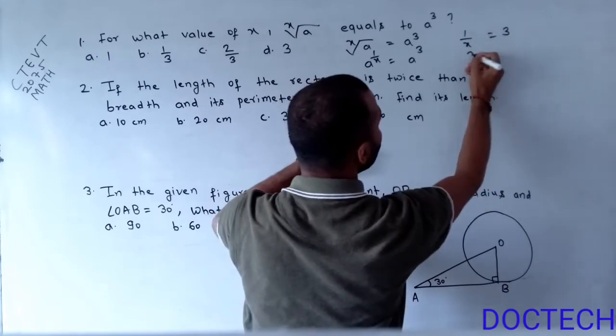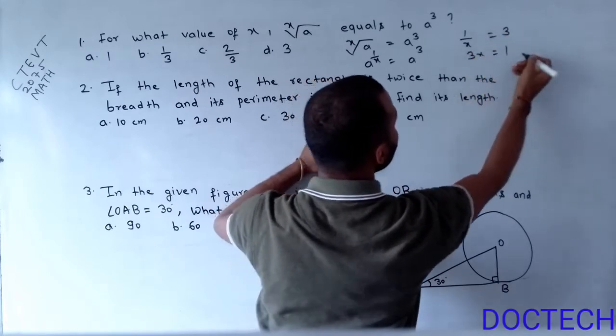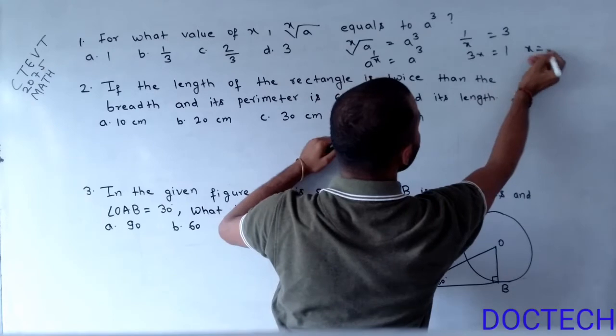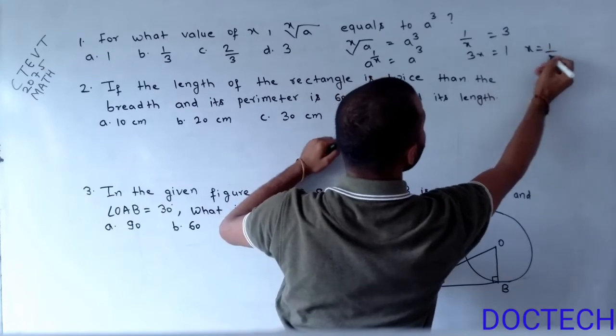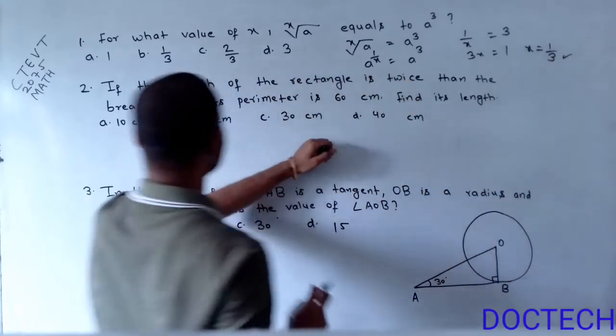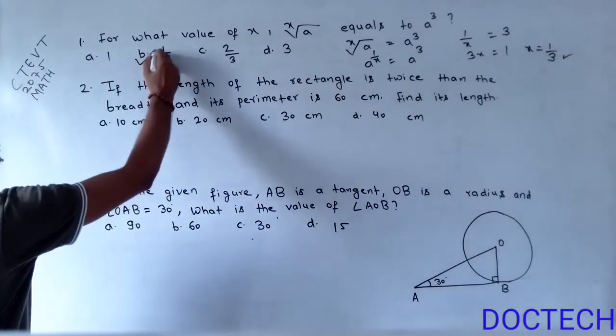Now, it will be 3x equal to 1, and x equal to 1 by 3. So, our answer will be x equal to 1 by 3.